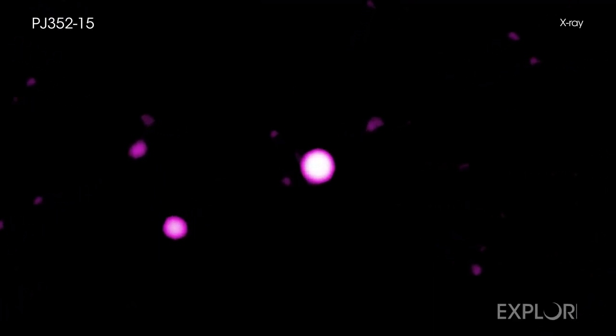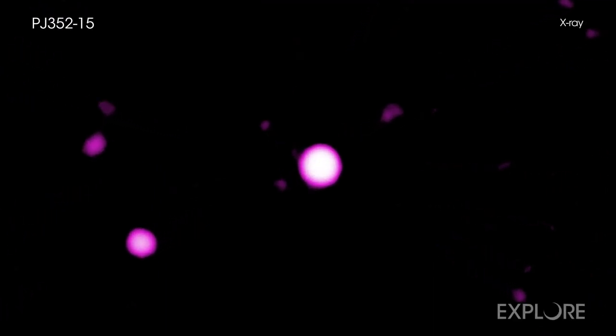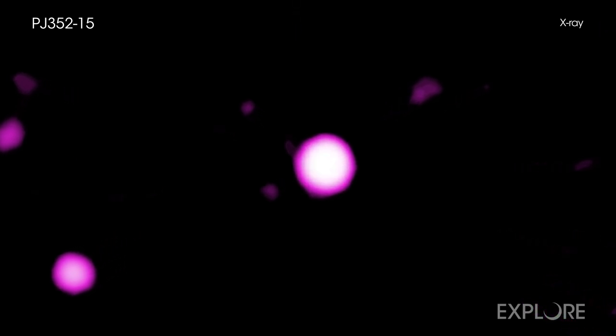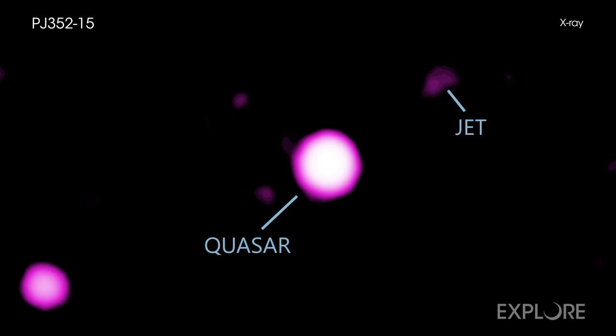Astronomers may have found an extraordinarily long jet from a supermassive black hole in the early universe using NASA's Chandra X-ray Observatory. This would be an important discovery if scientists can confirm this result with future observations.